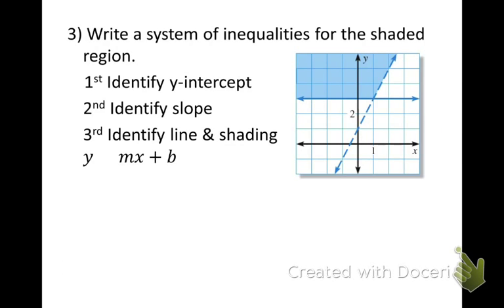The last thing I'm going to ask you to do is write a system of inequalities for a shaded region. I know I'm going to have two inequalities. For the first line, it's a horizontal line, so it's going to be y, some inequality, and some number. That number is 3. It is a solid line, so I know I'll have an underline, and it's shaded above, so it eats the y. My first equation is y is greater than or equal to 3.